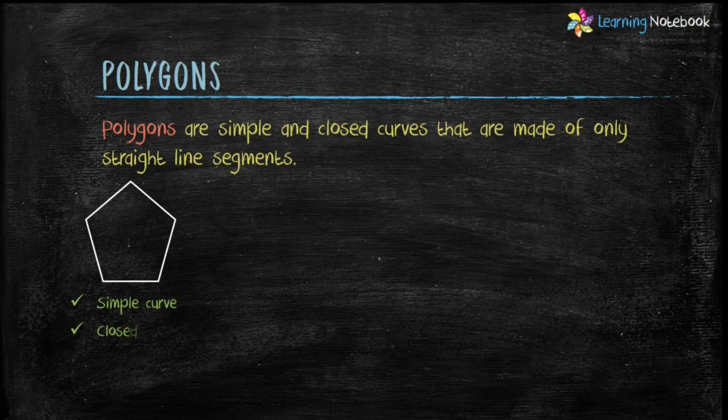This figure is a polygon because it is a simple curve, a closed curve and made of only line segments.